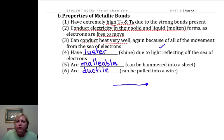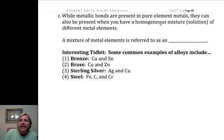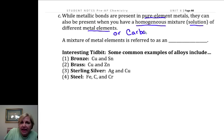Now if it's a pure element, it's a metallic bond. But we can also have a homogeneous mixture or solution of different metals. Frankly, it doesn't even have to be a different metal. It can be other elements like carbon. Carbon is in steel, so it could be carbon. It doesn't have to be a metal. But for now we're focusing on that mixture of elements and it's called an alloy.